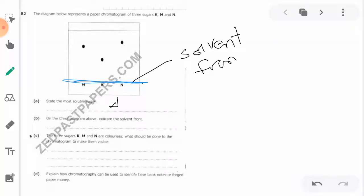Part C says the three sugars K, M, and N are colorless. What should be done to the chromatogram to make them visible? To make these sugars visible, they should be dipped in a solvent that has high chances of making them visible, and that one can be ethanol.